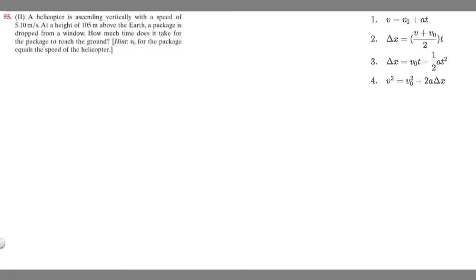In this problem, we're told a helicopter is ascending vertically with a speed of 5.1 meters per second. At a height of 105 meters above the earth, a package is dropped from the window. How much time does it take for the package to reach the ground?